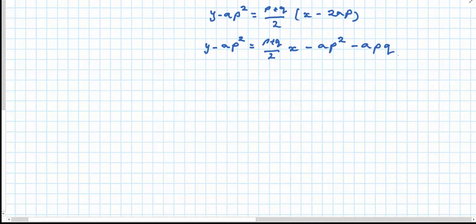Now I'm going to rearrange to write this in its general form. That would result in p plus q over 2 times x minus y. Move my minus ap squared to the right hand side which will cancel the negative ap squared on the other side, leaving minus apq equals 0.